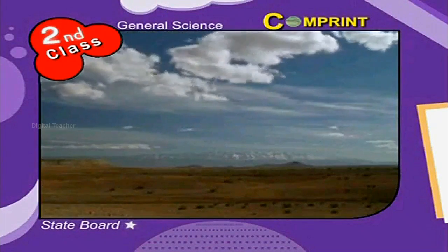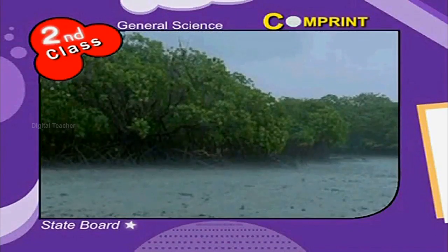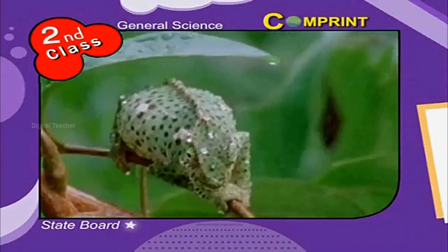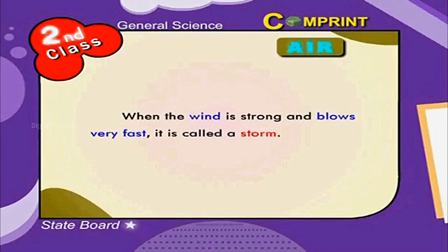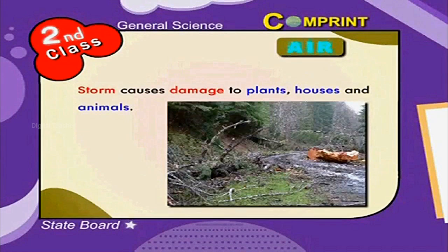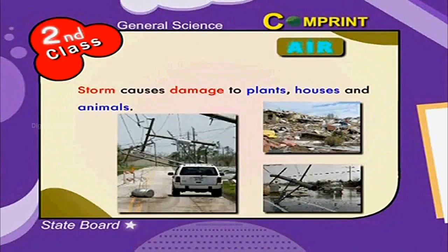Clouds are moved by air and this causes rain. A gentle wind is called a breeze; it gives pleasure. When the wind is strong and blows very fast, it is called a storm. Storm causes damage to plants, houses, and animals. Look at the picture showing the damage caused by a storm.